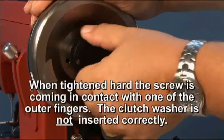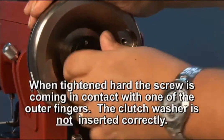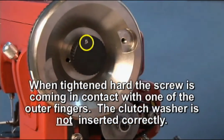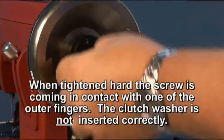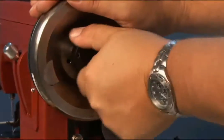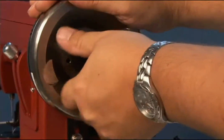Then when you release it, how far does it release? Or can you tighten it to the point where that balance wheel won't slip? You see, that screw is coming in contact with one of the fingers on the outside. We've got to take this thing out and turn that clutch washer 180 degrees.